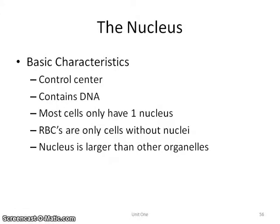Lastly, the nucleus — very, very important. It's the control center, kind of the brain of the cell. It contains all the DNA, so if you didn't have a nucleus, you would not be able to transfer DNA material from one cell to the next, telling it what it needs to become. In the human body, most cells only have one nucleus. Red blood cells are the only cells in your body without any nuclei, and the nucleus is always larger than the other organelles. So if you're ever in doubt of which one's which, the nucleus is the biggest.